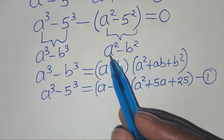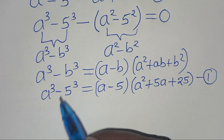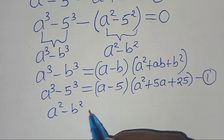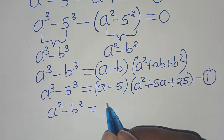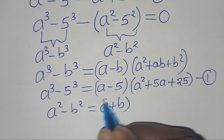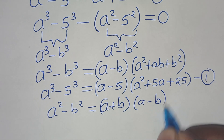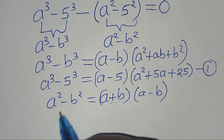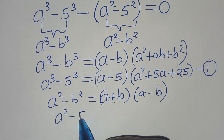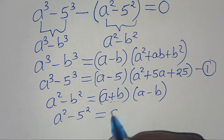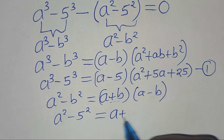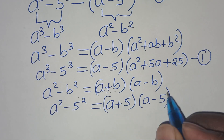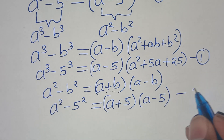And then we have the second part here, which is the difference of two perfect squares, which is a squared minus b squared, and this can be expressed as a plus b, then a minus b. Applying this identity, then a squared minus 5 squared can be expressed as a plus 5, then a minus 5. Let's call this equation 2.